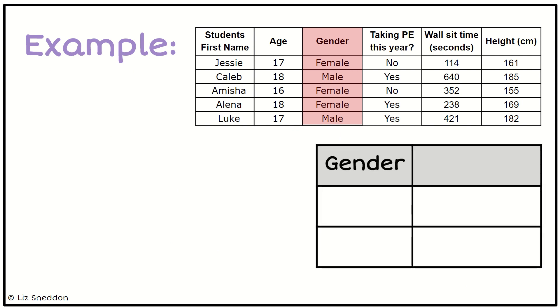I'll put gender as one variable, and I've got my males and my females. And now I need to find the frequency. So I'm going to count up the number of females, which is 3, and the number of males, which is 2. This is the data that I will now use to draw a bar graph.